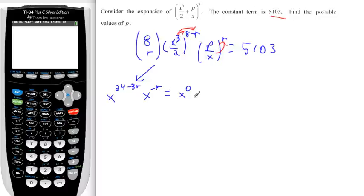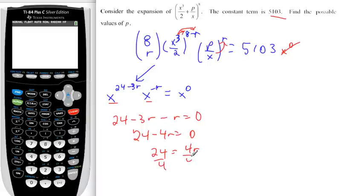You want the constant term, so you want this as x to the 0. We don't write it, but that's the constant. So therefore, 24 minus 3r, when you have the same base, you add the exponents, so we end up with 24 minus 4r equals 0. Adding 4r to both sides, dividing by 4, we can see that r equals 6.